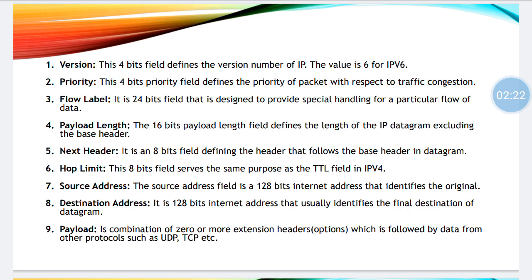Coming to hop limit, the bit allocated for the same is 8 bits. It serves the same purpose as the TTL field in IPv4. TTL is nothing but time to live — for example, 2 microseconds for a packet. So after 2 microseconds, that particular packet will be lost. If TTL becomes zero, that particular packet has been lost and we need to send the packet once again.